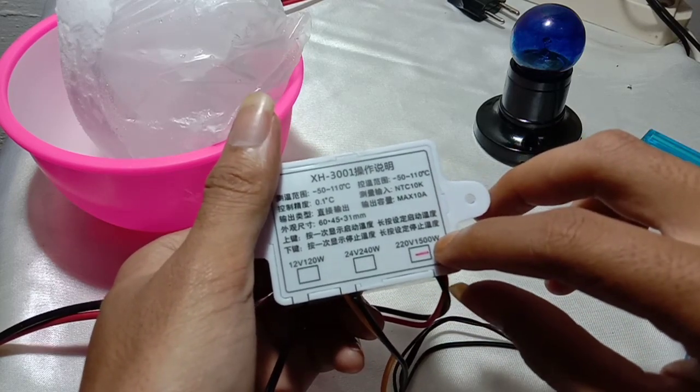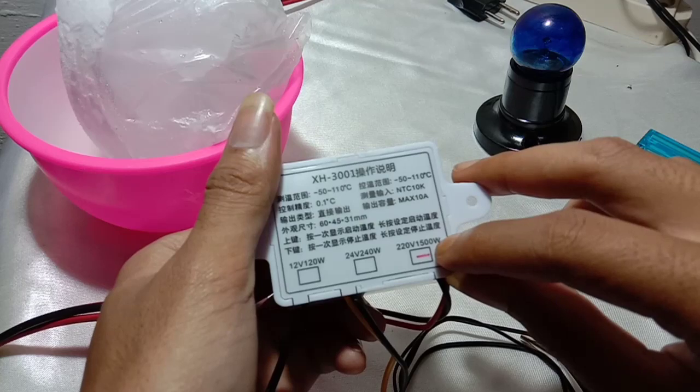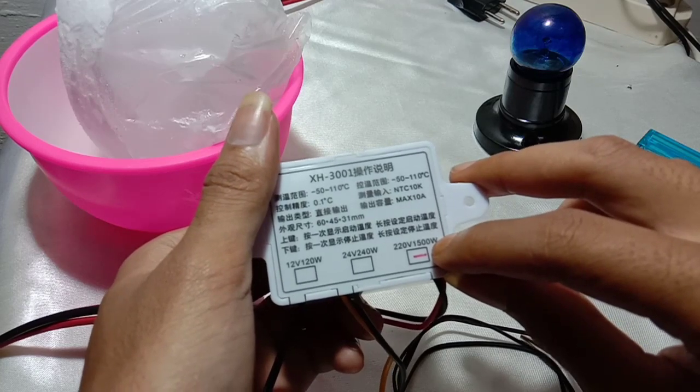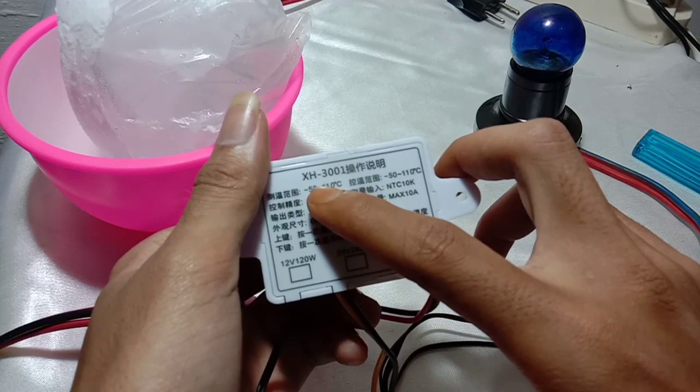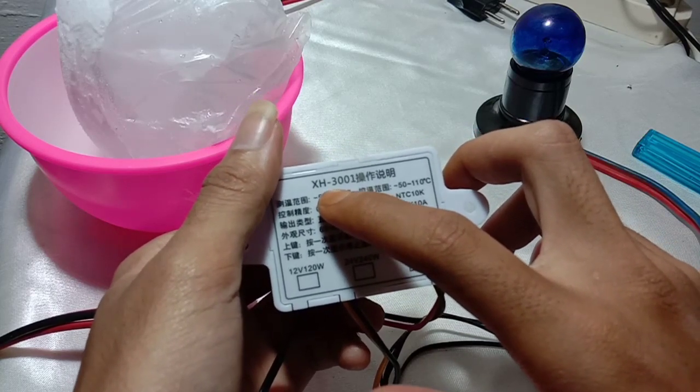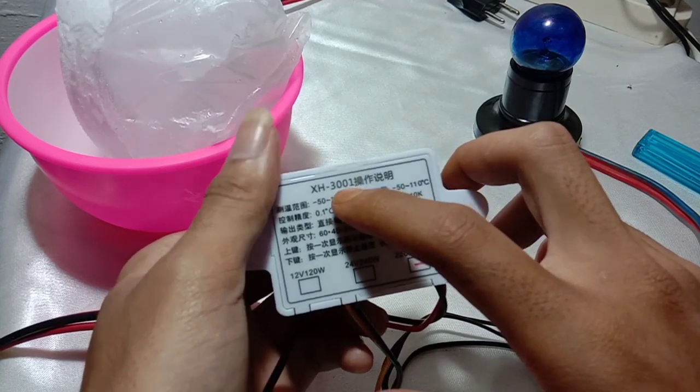The maximum output is 1500 watts and the type of this digital thermostat is XH3001.